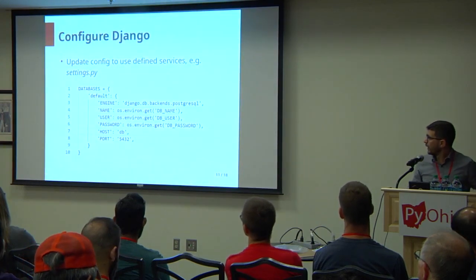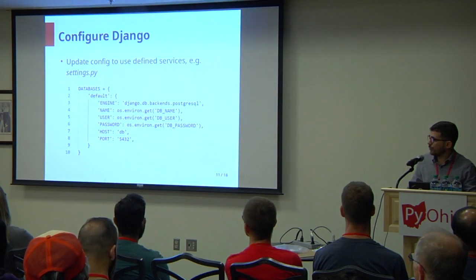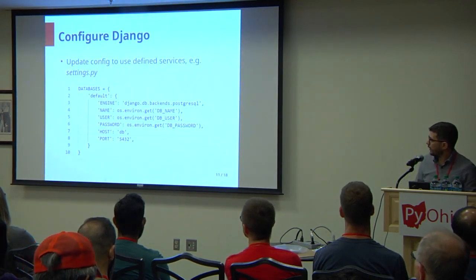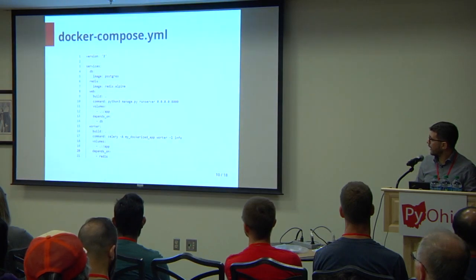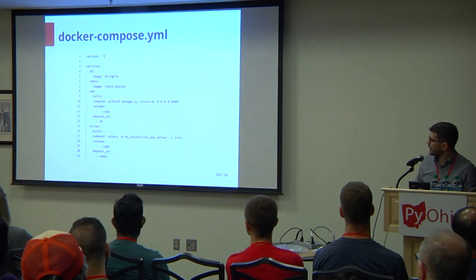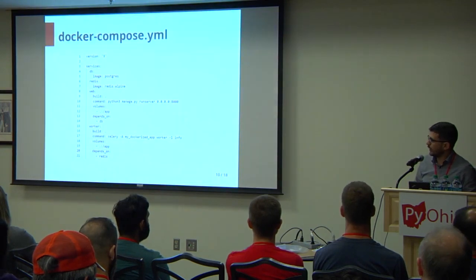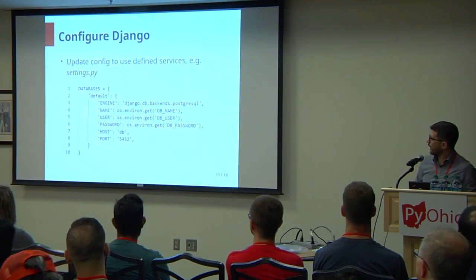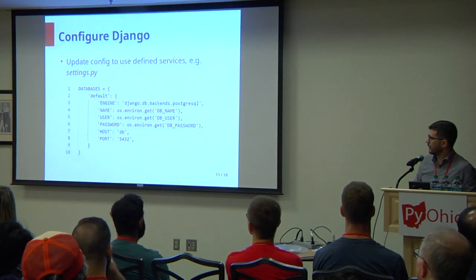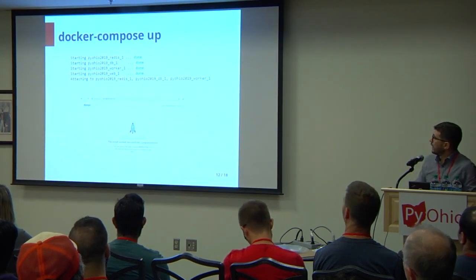Lastly, you need to hook up your Django app to use these services. This is one example of how you'd point your Django app to the Postgres database we defined. Note that in the host line, this just says db. In our docker-compose file we defined the Postgres database as db — that's not just the name as Docker refers to it, but it's also going to be the hostname in the network created for these components to interact. So when I point to my database, I just use db instead of localhost or an IP address.